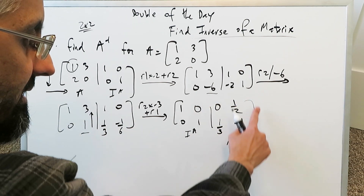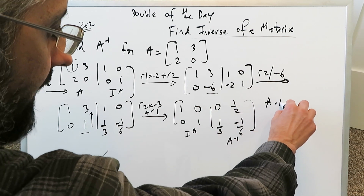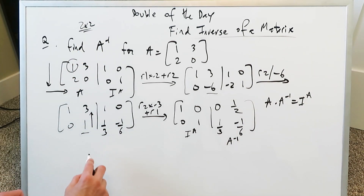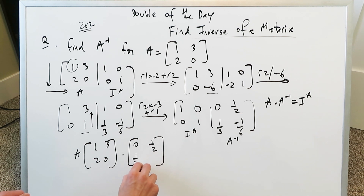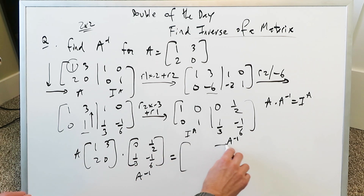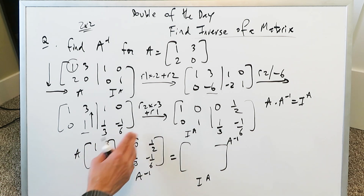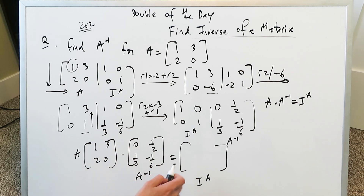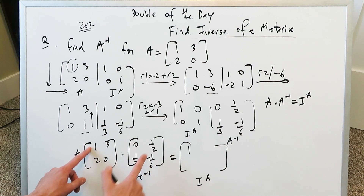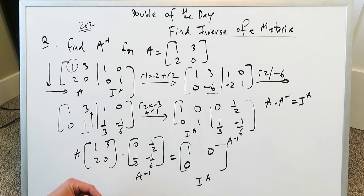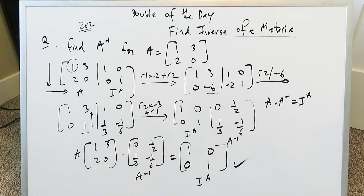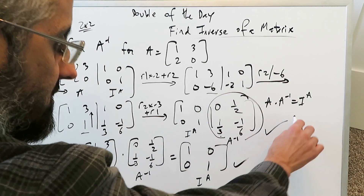Your inverse is this block on the right, but you can use a check. The original times your inverse should give you your identity matrix. My original is one, three, two, zero, and my inverse matrix is zero, one over two, one over three, minus one over six. Multiplying these two: one times zero plus three times one over three equals one; one times one over two plus three times minus one over six equals zero; two times zero plus zero times one over three equals zero; two times one over two plus zero times minus one over six equals one. We're getting the identity matrix, so this question has been completed.